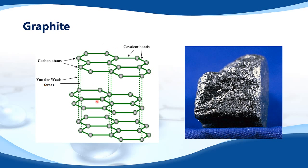Here is the structure of graphite, with a piece of graphite shown on the right. Graphite is made up of carbon where each carbon atom is bonded to three other carbon atoms. The bond angle between the carbons is 120 degrees with a trigonal planar arrangement. Graphite has a layered structure, and the layers are held together by weak Van der Waals forces, which allows them to slide over each other, making graphite quite soft.